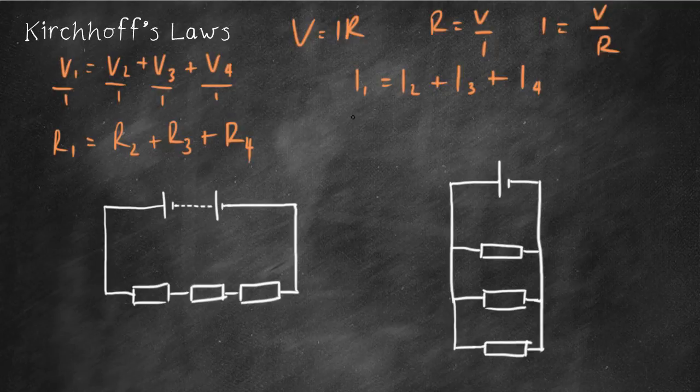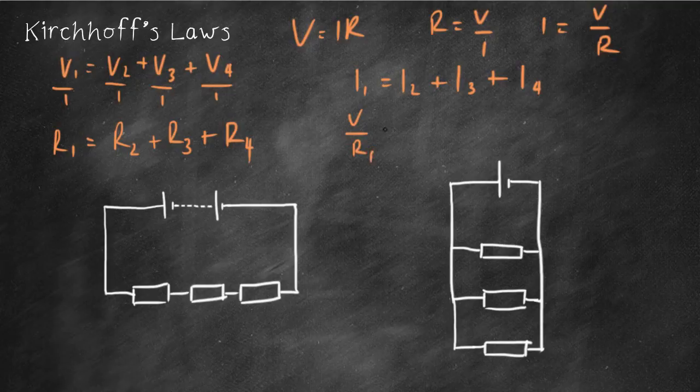Well, I is V over R, so the volt, sorry, V over R for the first one is going to be the total resistance in this case. The total resistance of the circuit is equivalent to this section of the circuit. I2 plus V over R3 plus V over R3 plus V over R4.